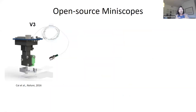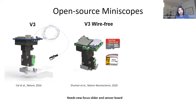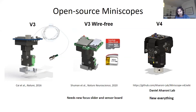Just to give a framework: the first miniature microscope we released we now call version three, which was released about five years ago. Since then we've developed wire-free versions, also open source and available — the version three wire-free — which removes all the cabling and tethering. What we'll mainly focus on in this workshop is the newest generation, which we call the version four. In a few minutes we'll compare the differences across these versions and talk about where the project is going in the future.